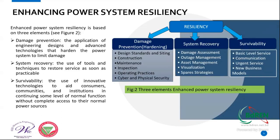The second element is system recovery — using tools, technology, and techniques to restore the system as soon as possible in a practical manner, with assessments made during the process. The third element is survivability — using innovative technologies to aid consumers, communities, and institutions so that technology can work normally even under abnormal conditions.